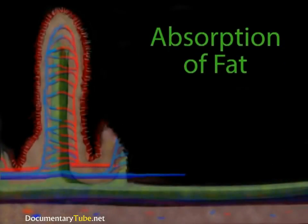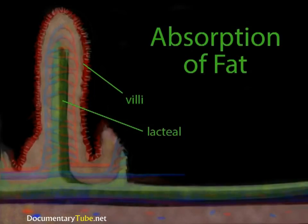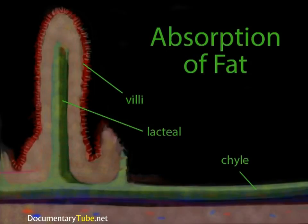The lymphatic system's second function also takes place in the small intestine: the absorption of fats. There are specialized lymph vessels called lacteals in the intestinal villi. These pick up fats released from digested food and absorb them into the villus tissue. The liquid in the vessels takes on a milky color and instead of being called lymph, this fluid is called chyle. The chyle eventually gets dumped into the subclavian vein, just like lymph—that is how fats enter the circulatory system.